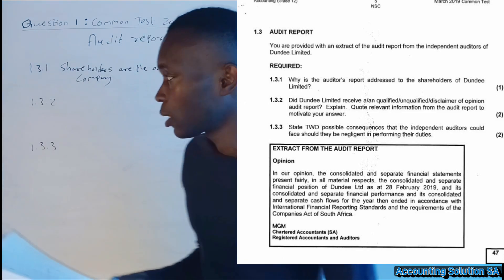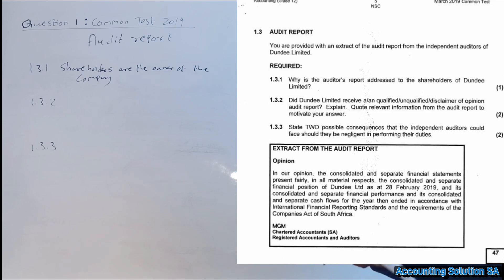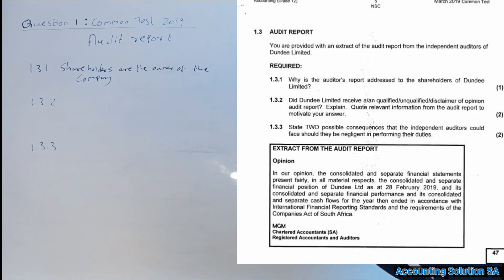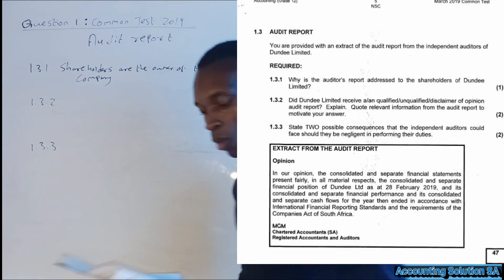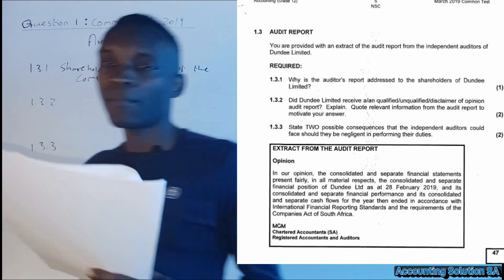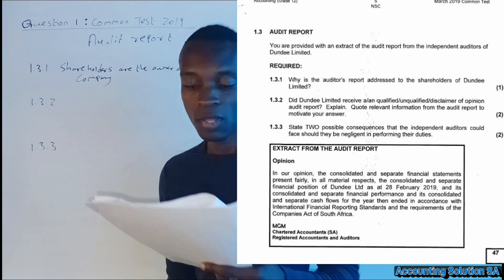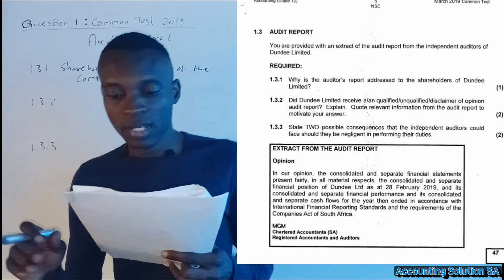Shareholders, as owners, must know if there is something wrong in the company — they are the first ones who must be informed. Now for question 1.3.2: did Dundee Limited receive a qualified, unqualified, or disclaimer opinion audit report? After identifying it, you must quote relevant information from the report to motivate your answer. Remember, there are three types mentioned: qualified, unqualified, and disclaimer opinion.